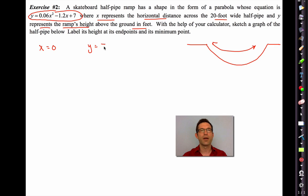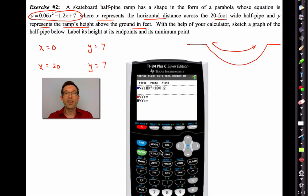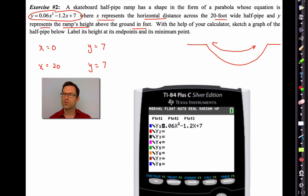It says with the help of your calculator, sketch a graph of the half pipe below. So we can definitely kind of get a feeling for this. But before we do that, let's actually get some values. At X equals zero, we find that Y is equal to seven. And I can actually easily tell that from this equation. If this is well designed, it's perfectly symmetric. And at X equals 20, if we plug that into the equation, we'd also get Y equals seven. I'm doing this to give myself sort of a general idea of the graphing window. So let's bring out the TI 84 plus.